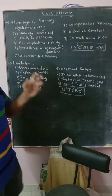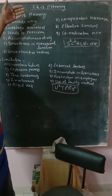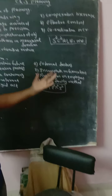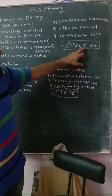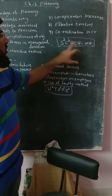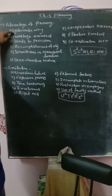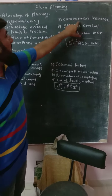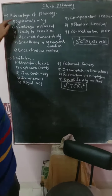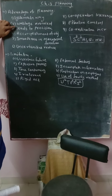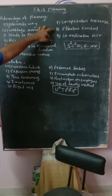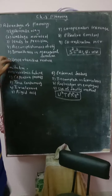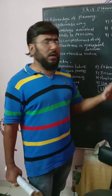To make it easy to remember, I give a keyword in every lecture. The word here is SCALE WU — S: systematic way; C: cooperation and coordination increase; A: accomplishment of objective; L: leads to precision; E: effective control; W: wastage avoided; U: uncertainty reduced. You can arrange your points accordingly.